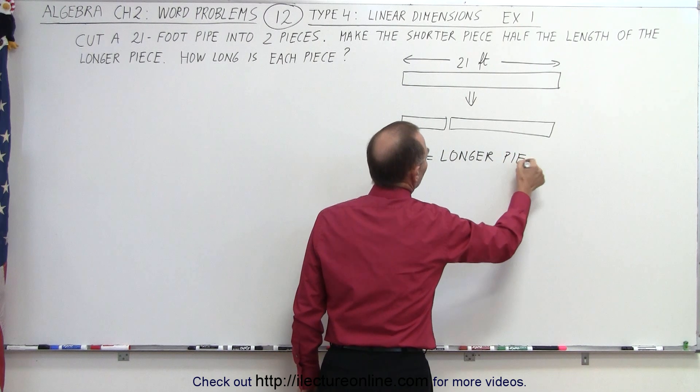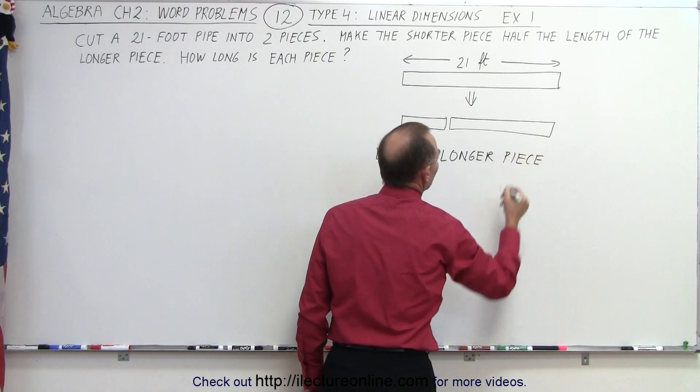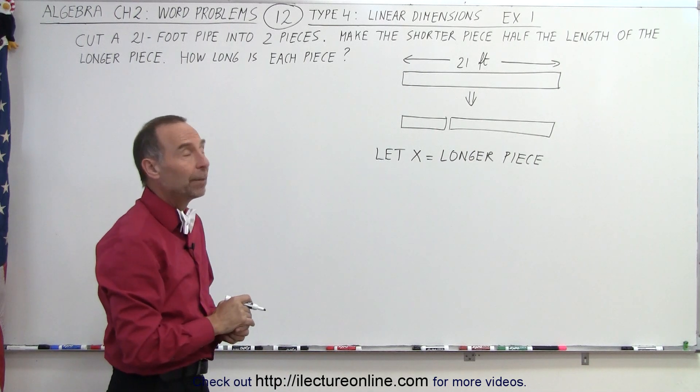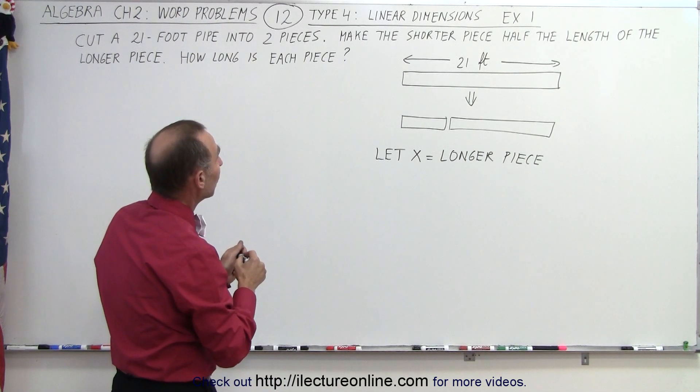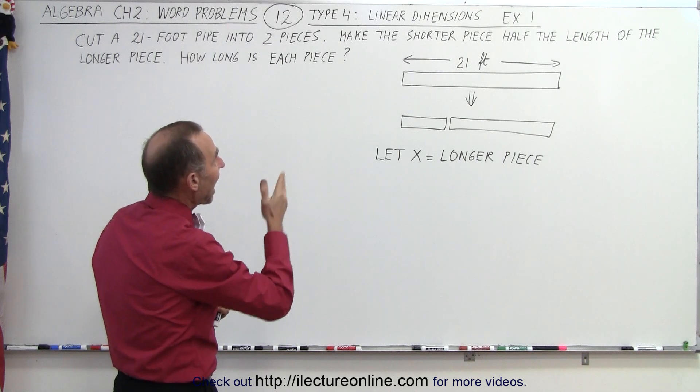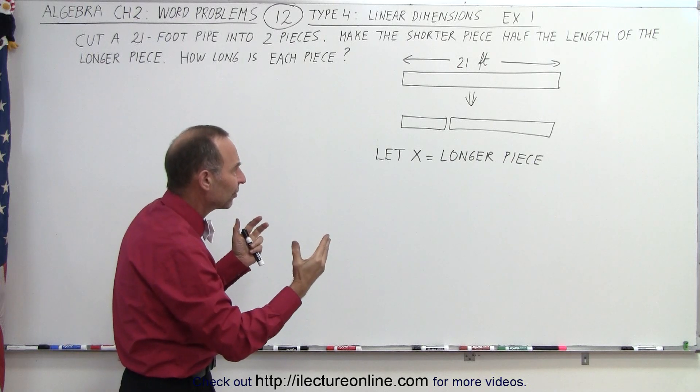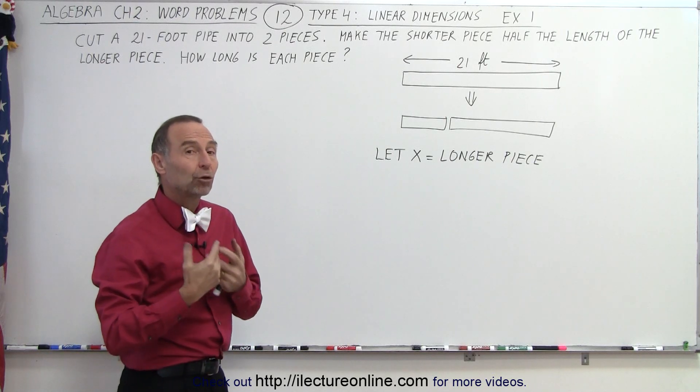Now, this is contrary to what we normally do. Normally, we let x be the smaller value. But let's try it this way, because the sentence says we make the shorter piece half the length of the longer piece. So it makes sense that the longer piece is x, and we write the shorter piece in terms of x.